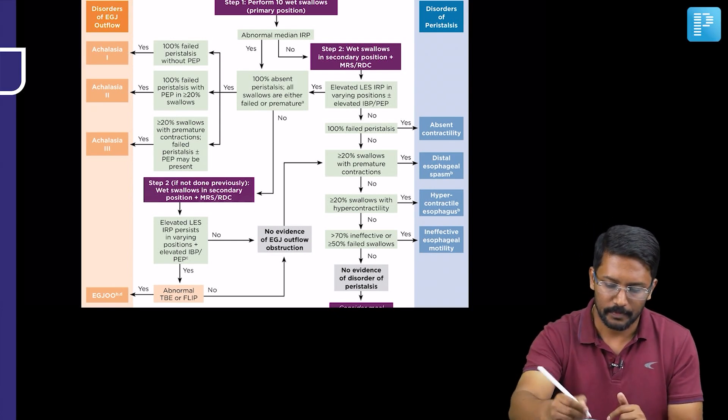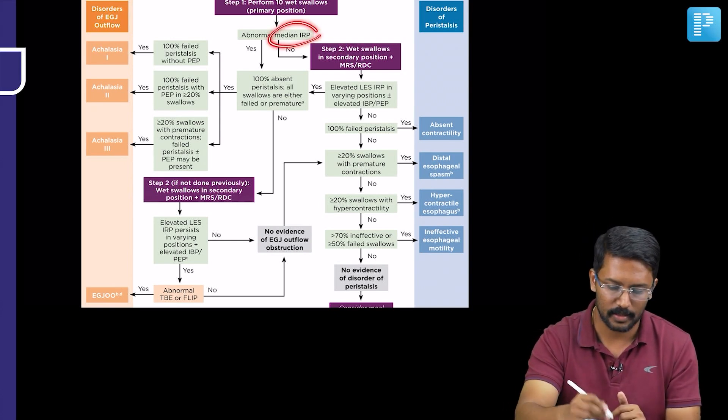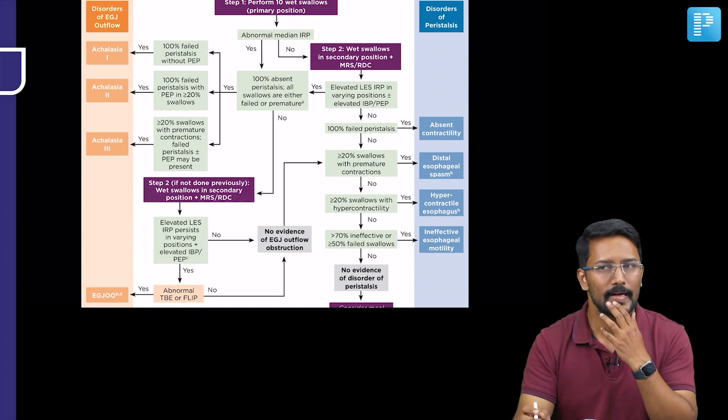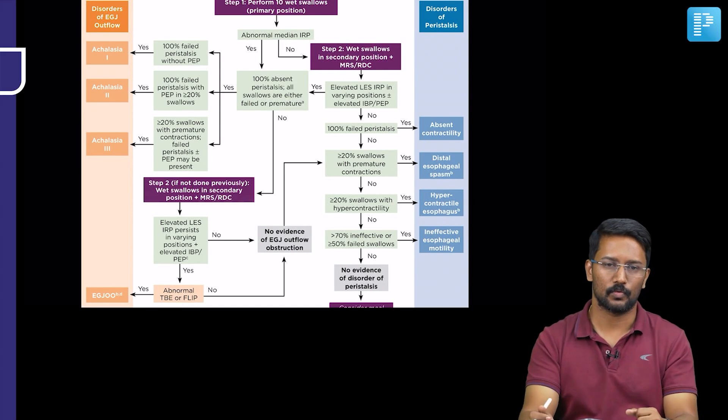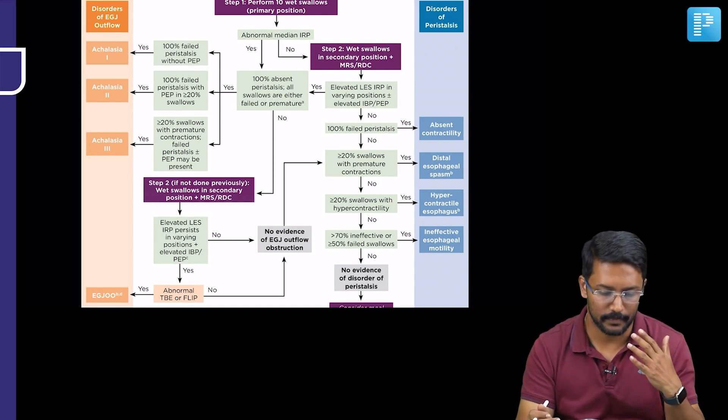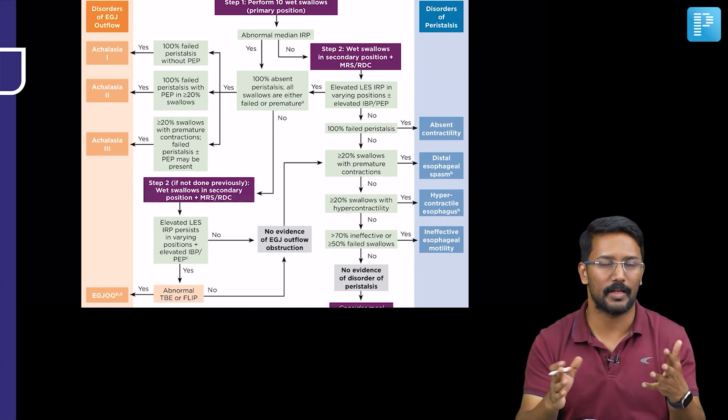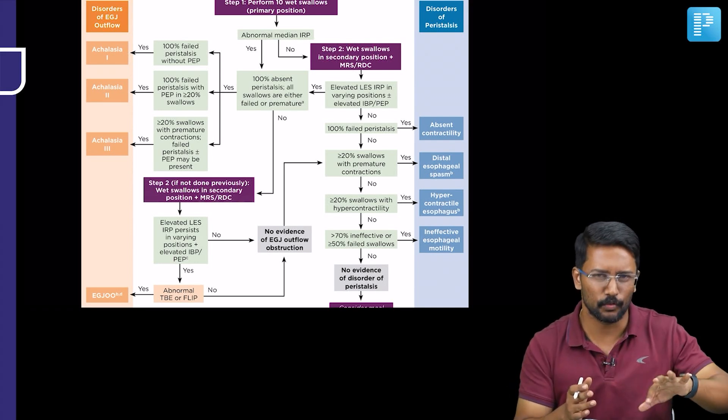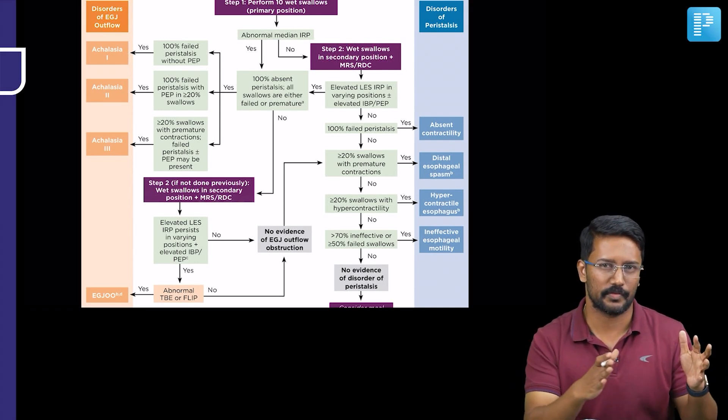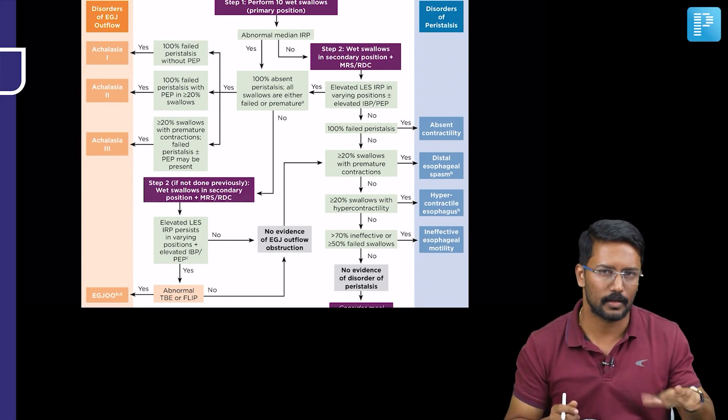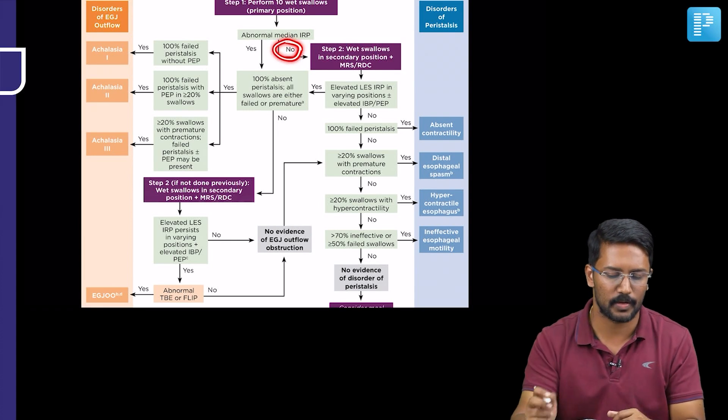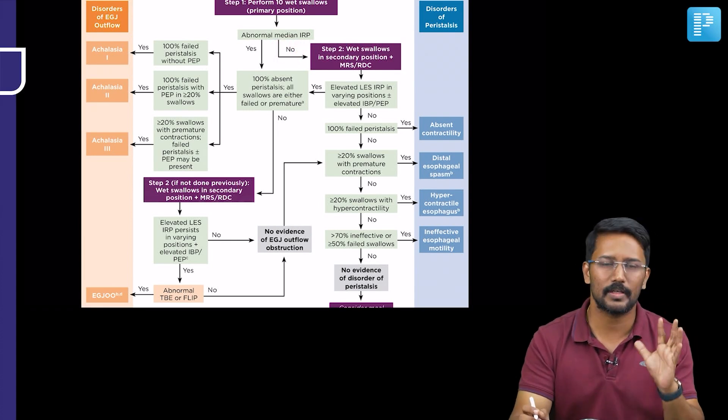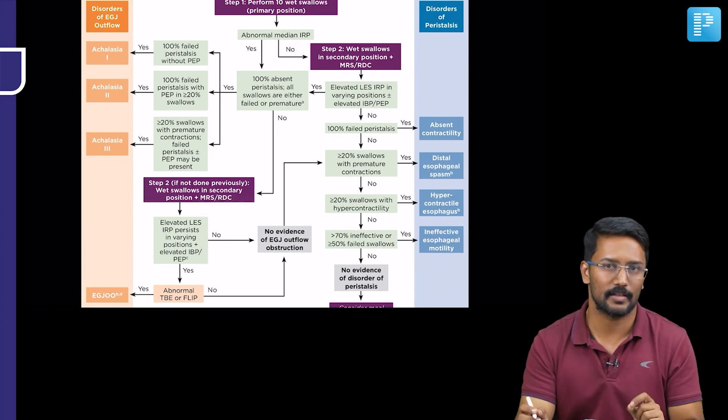Now if the median IRP is probably normal, in the current Chicago classification, it asks you to take some more steps to confirm whether the IRP will be elevated in different positions, but if you ignore that part, because we do not move away from achalasia cardia that easily, but once you have ruled out the achalasia cardia, you conclude that the median IRP is normal, then you are mostly thinking about the peristaltic disorders.